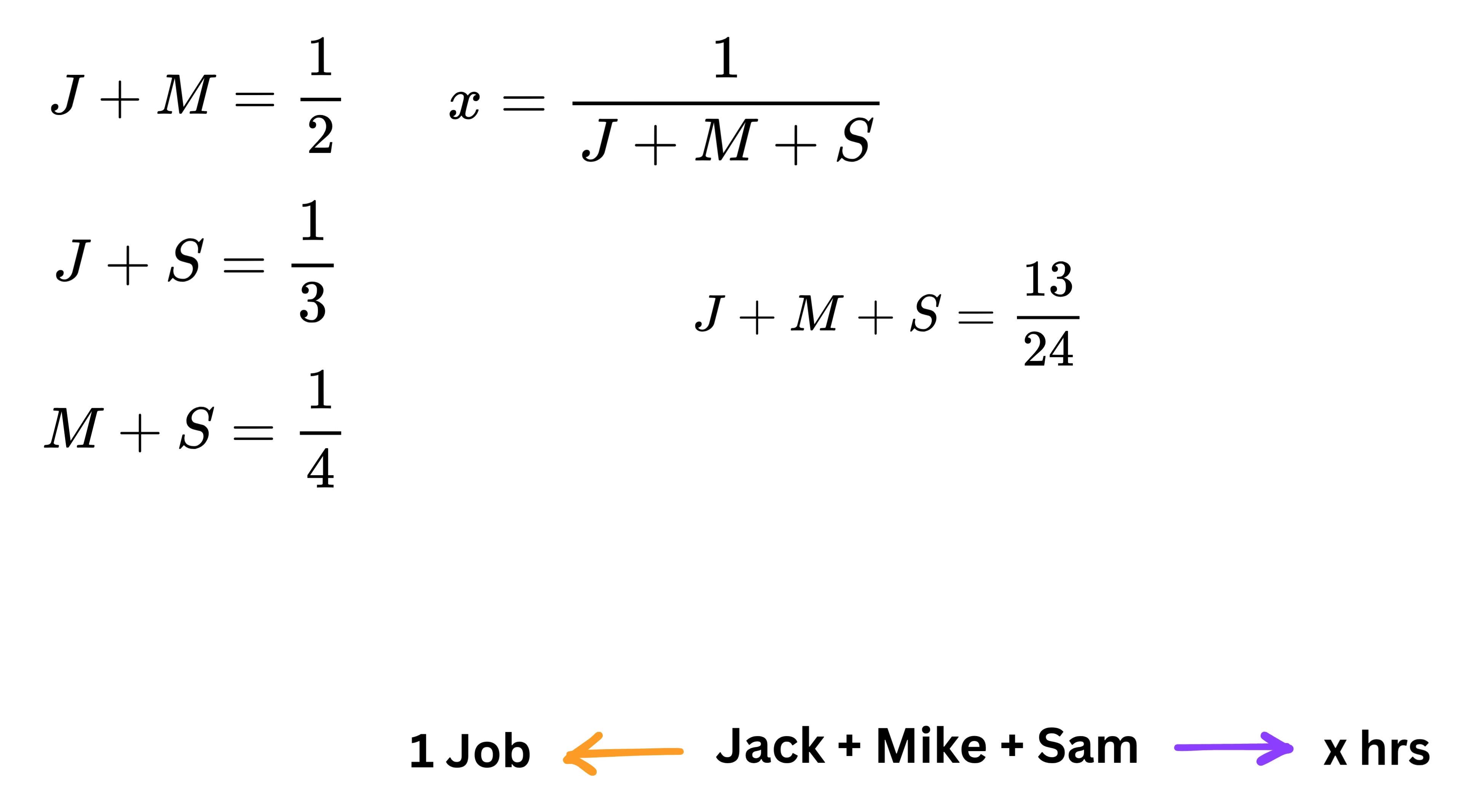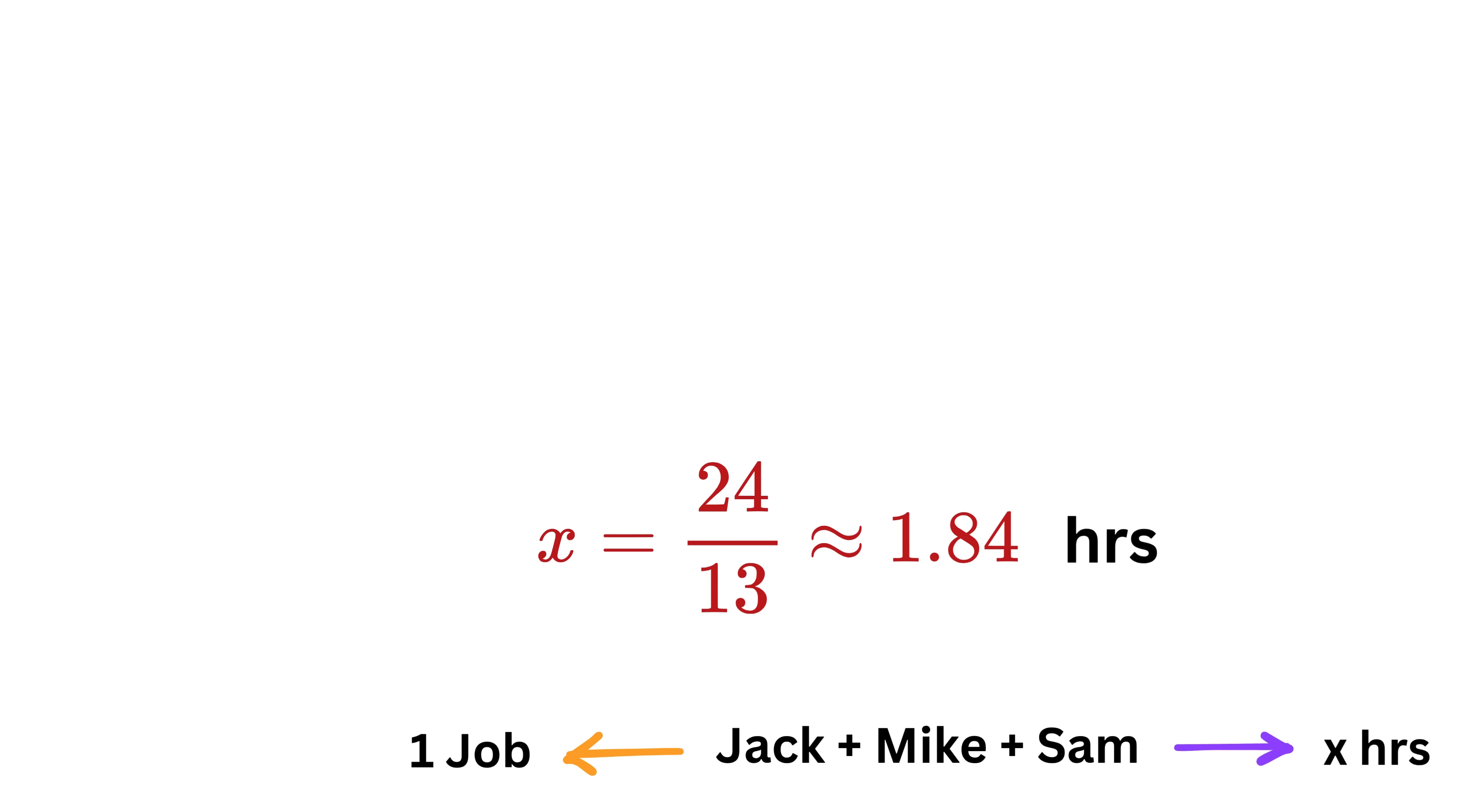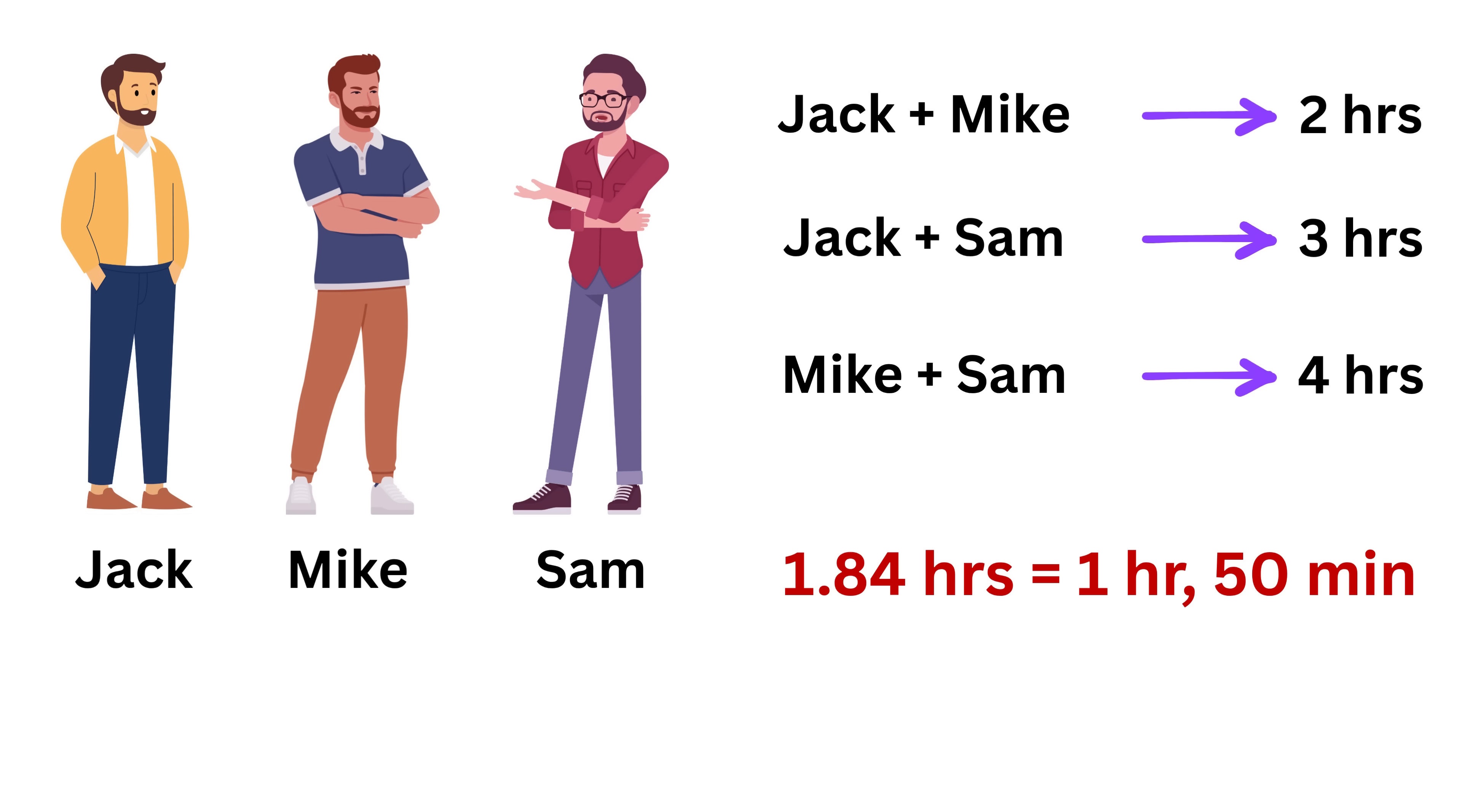So in one hour, all three of them together can complete thirteen divided by twenty-four of the job. Now the only thing left is to find how long it will take them to complete one full job. We already said that the time X equals one divided by the combined rate. So X equals one divided by thirteen divided by twenty-four, which is the same as twenty-four divided by thirteen. Now, twenty-four divided by thirteen is approximately one point eight four hours. But instead of writing in decimals, let us express it nicely in hours and minutes. One point eight four hours means one hour plus zero point eight four of an hour. Since one hour has sixty minutes, we multiply zero point eight four by sixty to get around fifty minutes. So Jack, Mike, and Sam working together will finish the job in about one hour and fifty minutes.